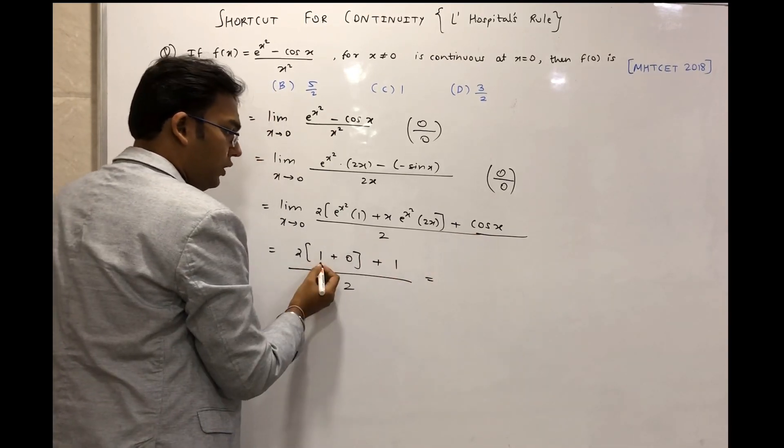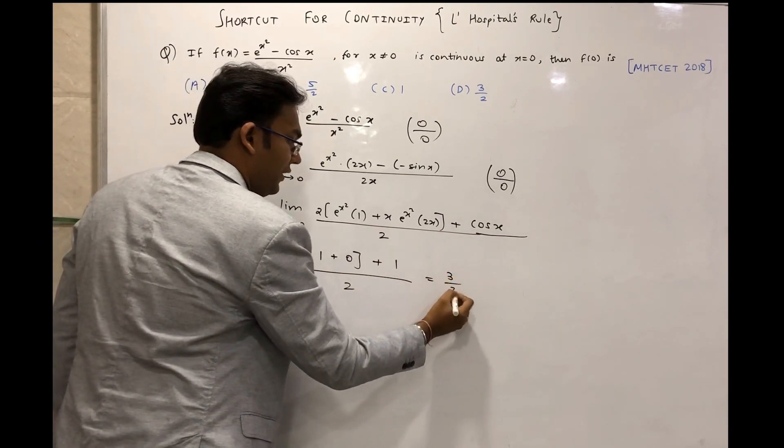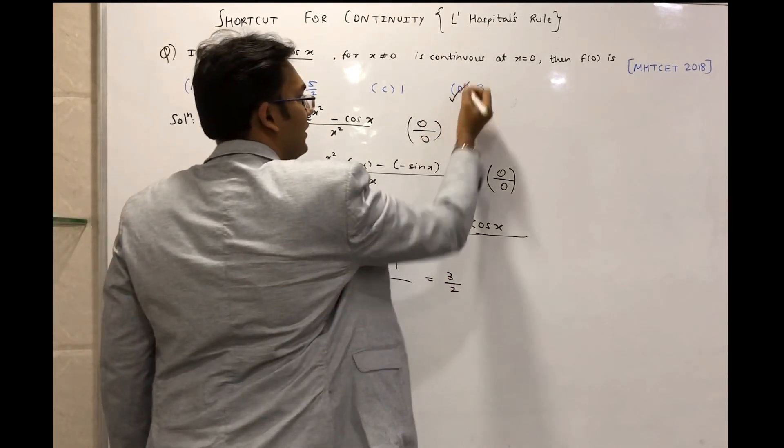So this will become 2 times 1 is 2 plus 1 is 3, divided by 2. So the answer is 3/2.